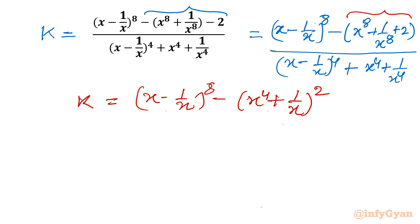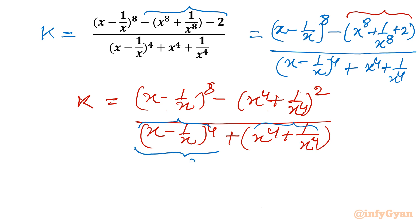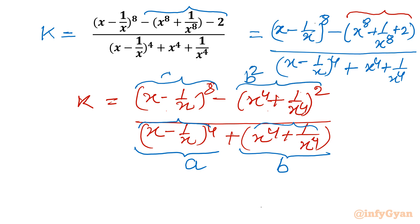Once you expand (x^4 + 1/x^4)^2, you get x^8 + 1/x^8 + 2 times x^4 times 1/x^4, so only 2 remains. In the denominator we write (x - 1/x)^4 + (x^4 + 1/x^4). Now I will use substitution: let a = (x - 1/x)^4 and b = (x^4 + 1/x^4). So the numerator is b^2 - a^2... wait, numerator is a^2 - b^2... actually k becomes (a^2 - b^2) divided by (a + b).